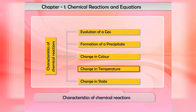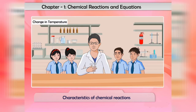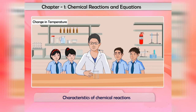The fourth characteristic is change in temperature. Some chemical reactions produce heat energy, which makes the reaction mixture hot, whereas some chemical reactions absorb heat energy, which makes the reaction mixture cold. So change in temperature can be a rise or a fall in the temperature of the reaction.